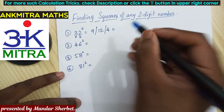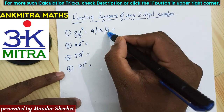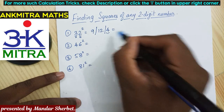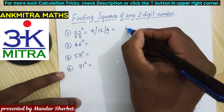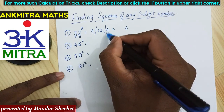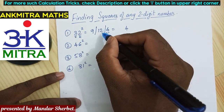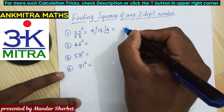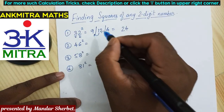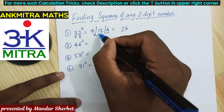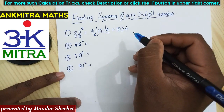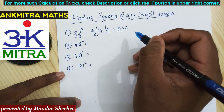For the final answer, take the units place digit from each section starting from the right. The 4 goes directly to the units place of the answer — it's a single digit, nothing carried. Next, 12 is two digits, so 2 goes to the answer and 1 is carried to the next section. 9 plus 1 becomes 10, so we write down 10. The final answer is 1024, which is the square of 32.